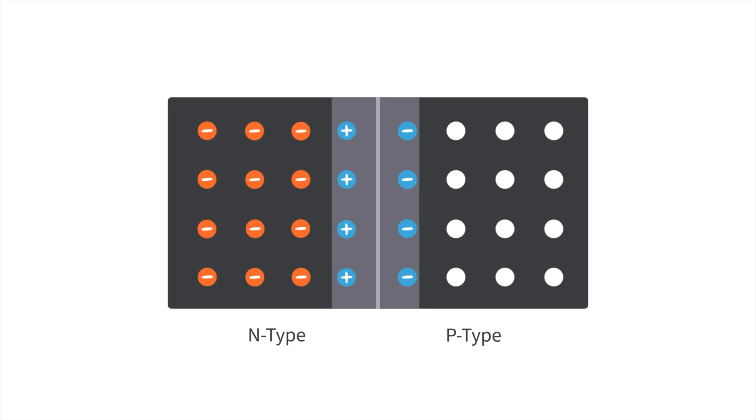This side-by-side region of immobile positive and negative ions is known as the depletion region, a region depleted of mobile charge carriers. The width of the depletion region can be increased by reverse biasing the p-n junction.